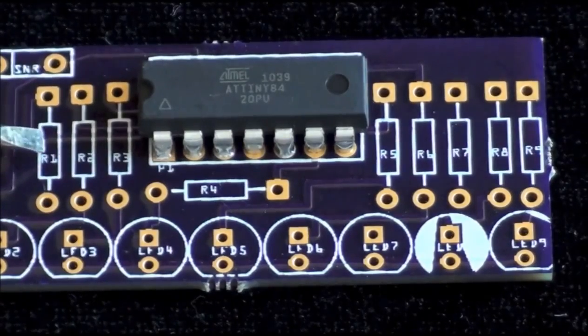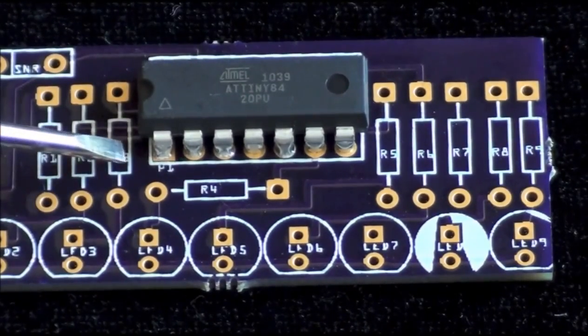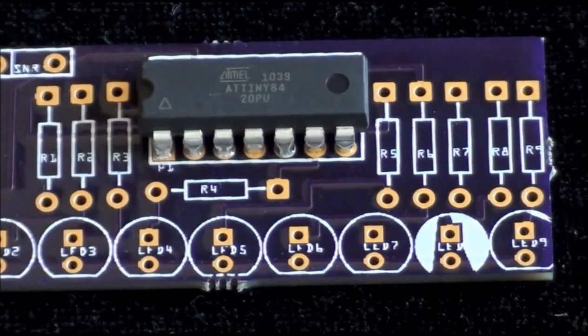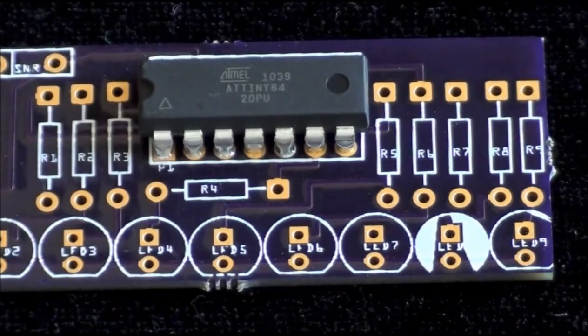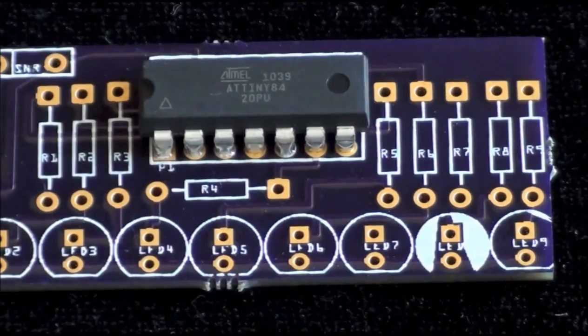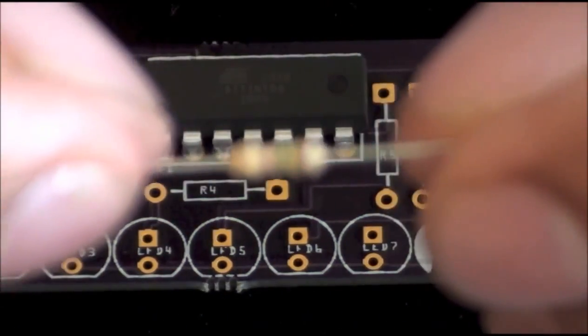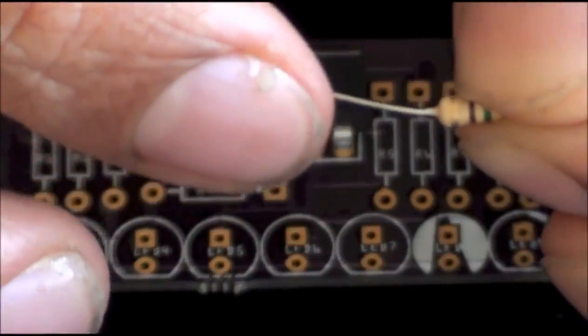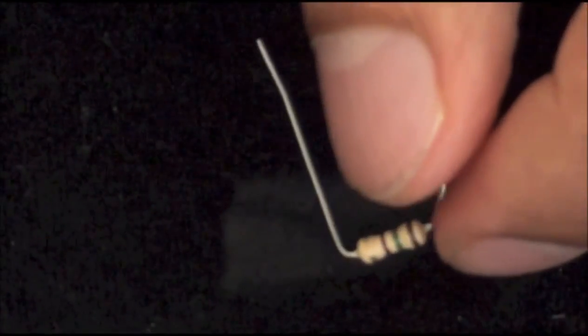On the PCB, you will notice 9 sections labeled R1 through R9. This is where we will be placing our 9 resistors for the 9 LEDs. To prepare the resistors for the PCB, we will have to bend each of the resistor's legs 90 degrees. We will do this for each resistor.